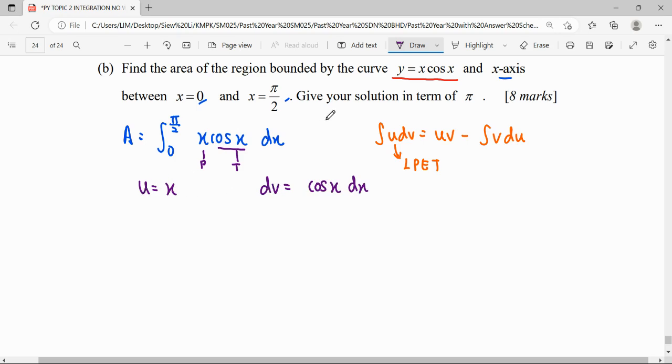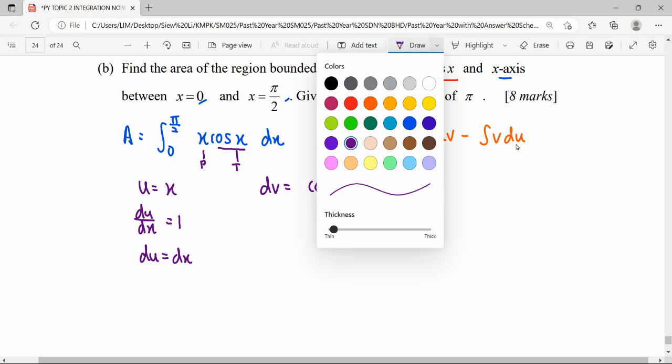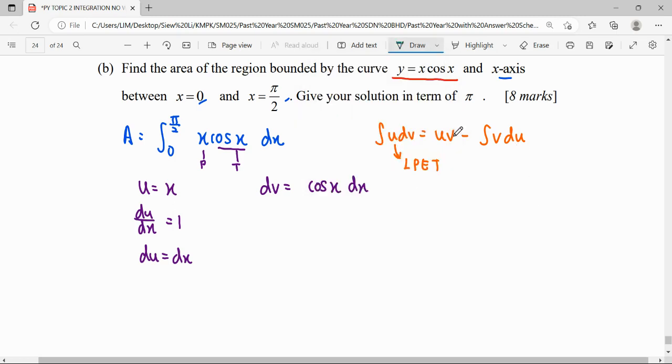For u, we need to differentiate to find du. Differentiating u = x with respect to x, we get 1, so du = dx. Meanwhile, for dv, we need to integrate in order to get v. Integrating cos x, we get v = sin x.